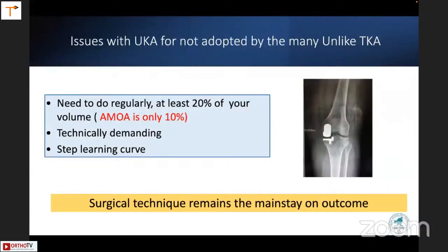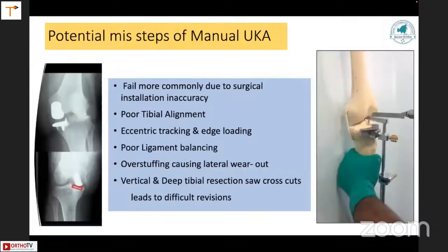Issues with UKA: it needs to be done regularly at at least 20 percent of volume, but many units only do 10 percent. It is technically demanding with a steep learning curve. Surgical technique remains the mainstay. Potential missteps in manual UKA include surgical installation inaccuracy, poor table alignment, eccentric tracking, poor ligament balancing, and over-stuffing which can cause lateral wear.